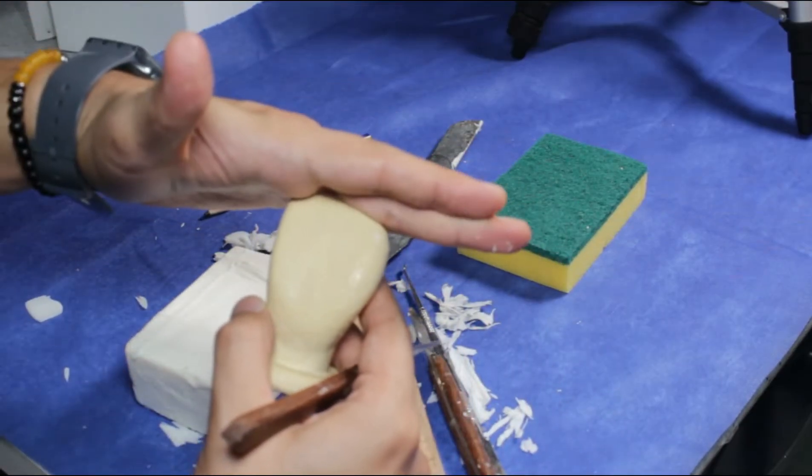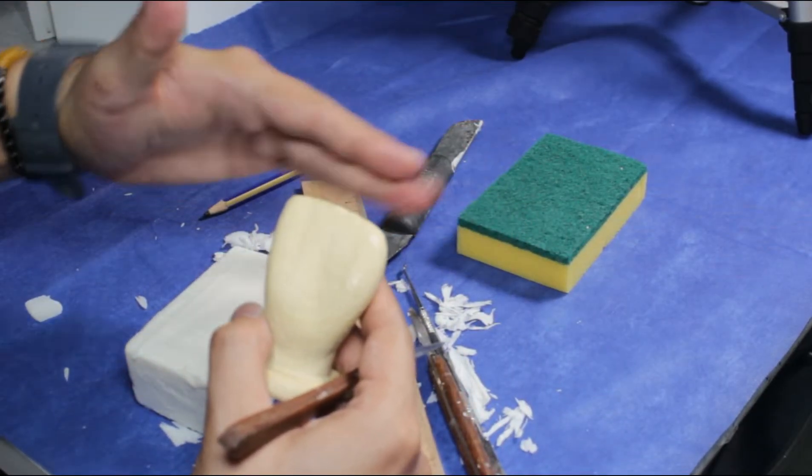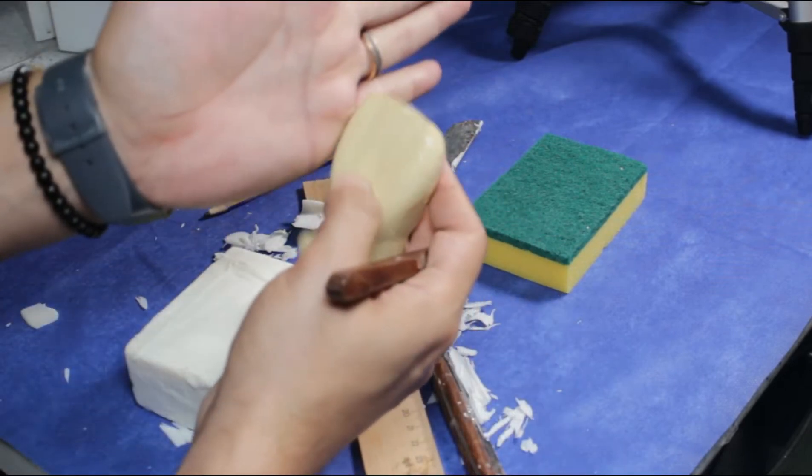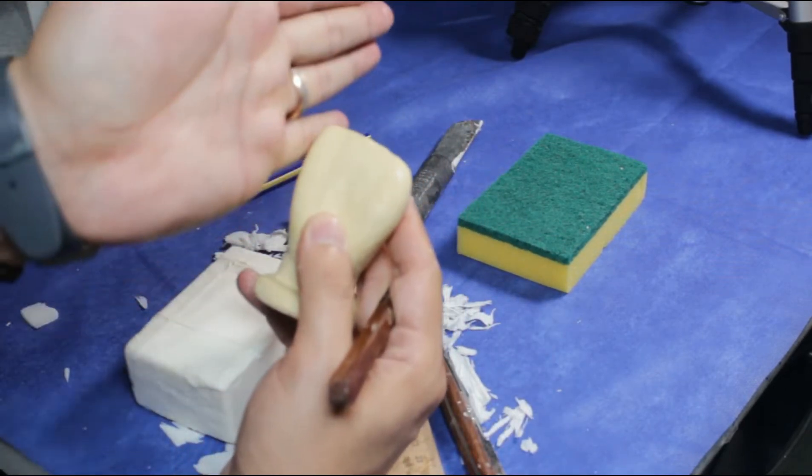Also from incisal to the cervical, the crown gets narrower. At the mesial side, it's straight, at the distal part, it's oval.